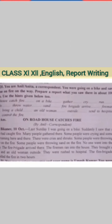Here is an example of a report on an accident. You are Anil or Anita, a correspondent for Samadata. You were going on a bike and saw a house on fire on the way. Prepare a report about what you saw, in about 100 words. Use the hints given below. Heading: 'On road, house catches fire.'